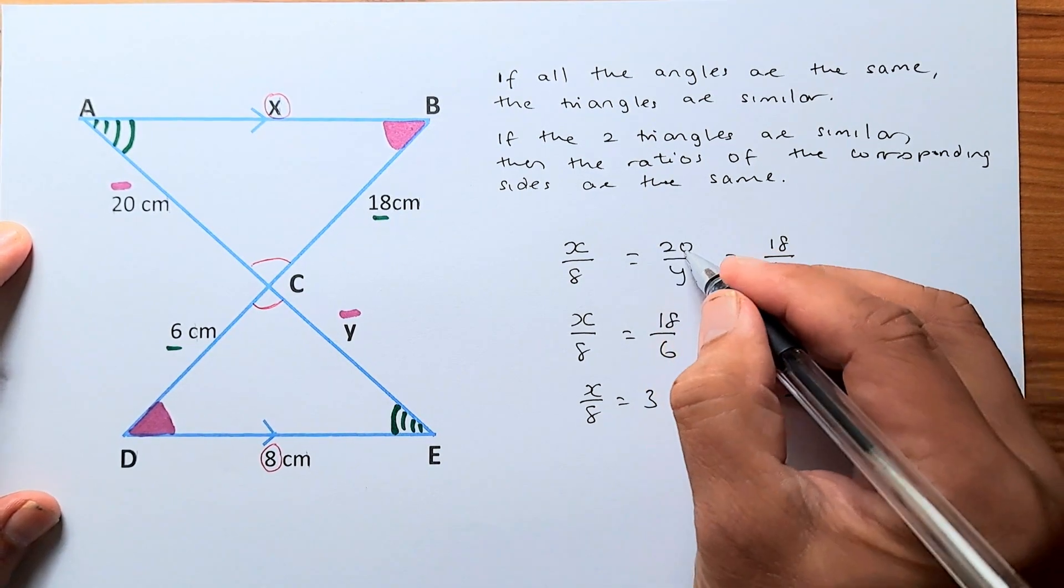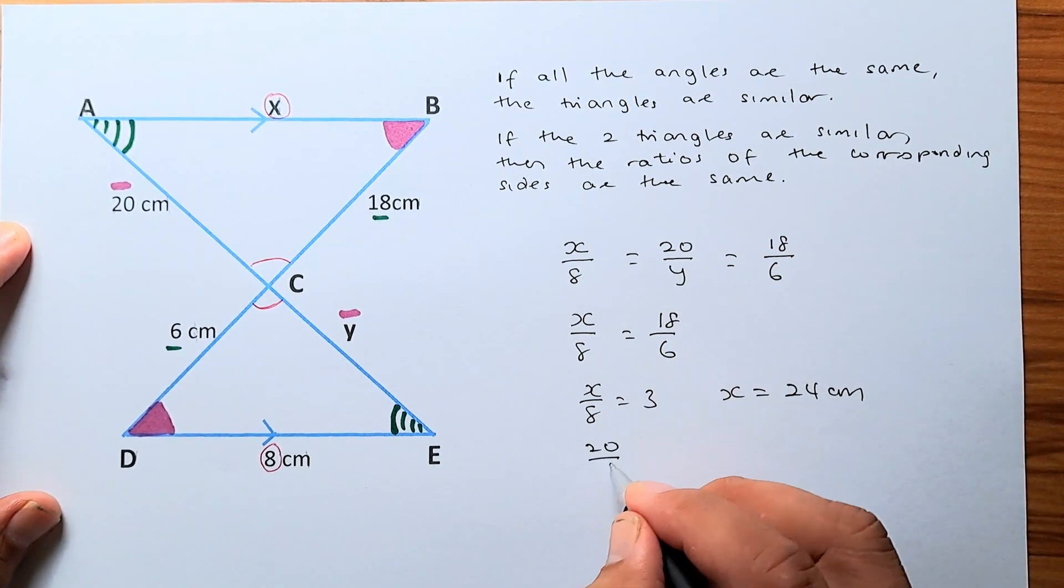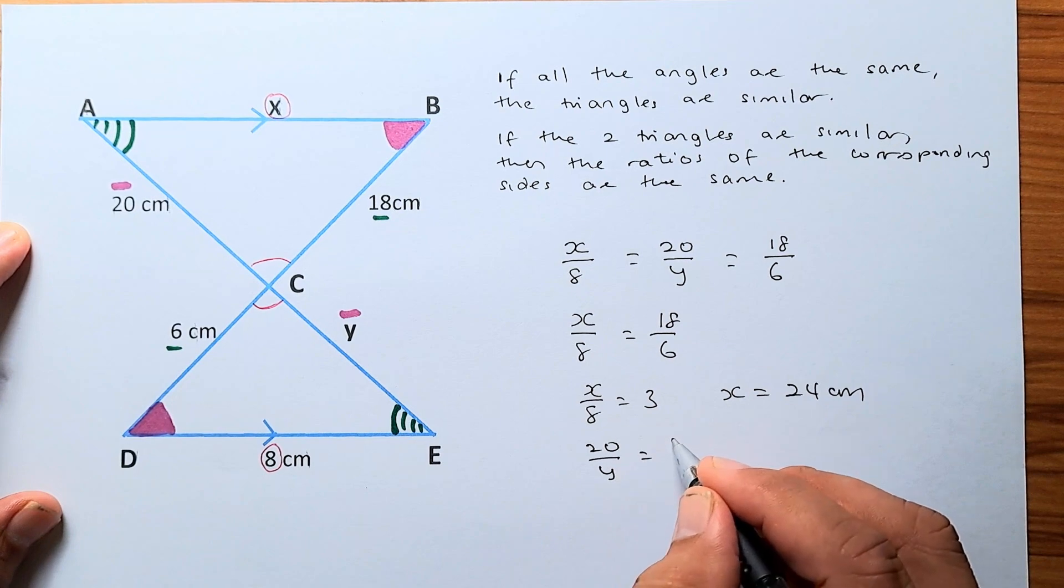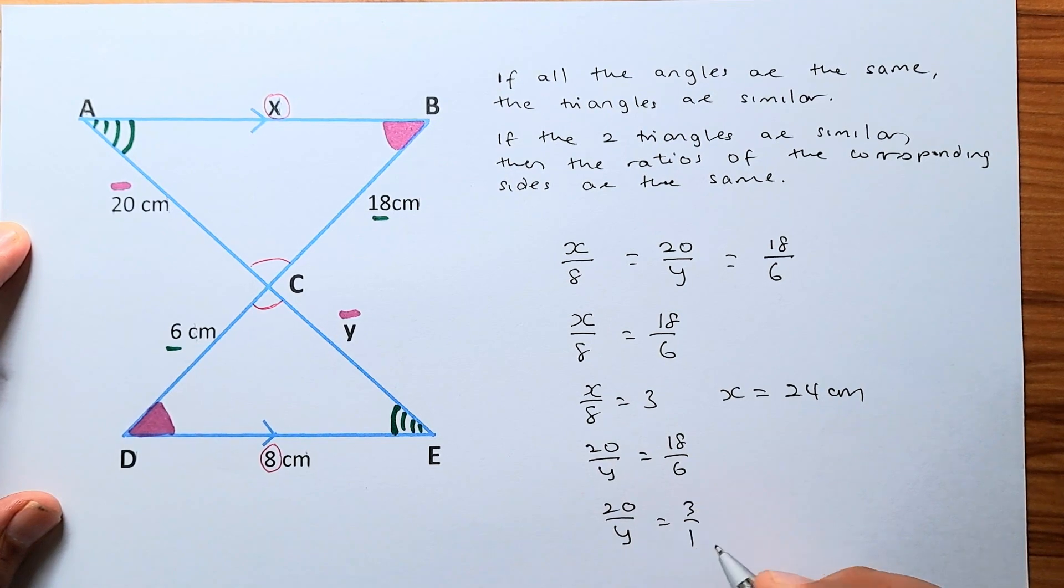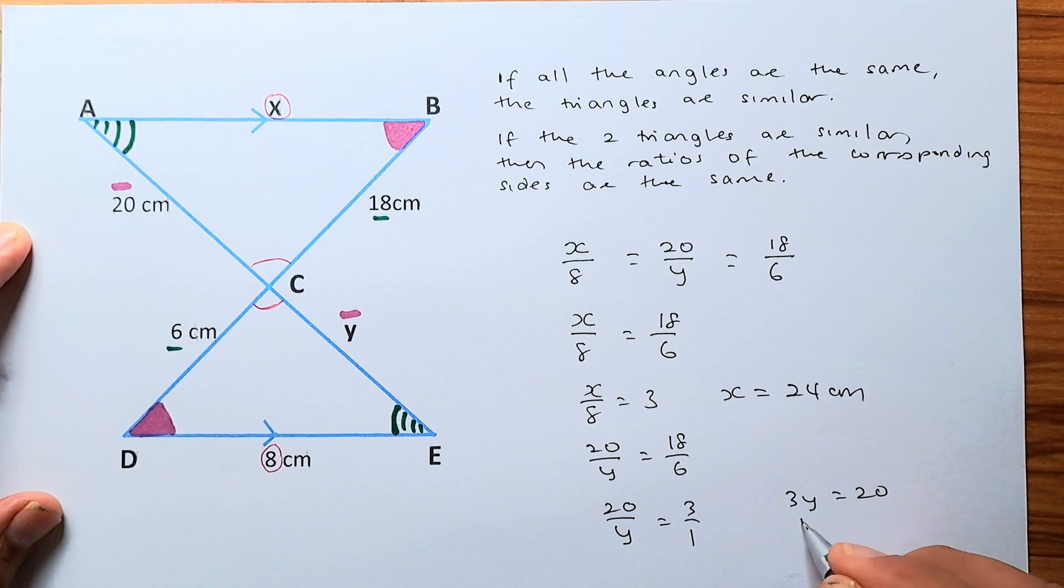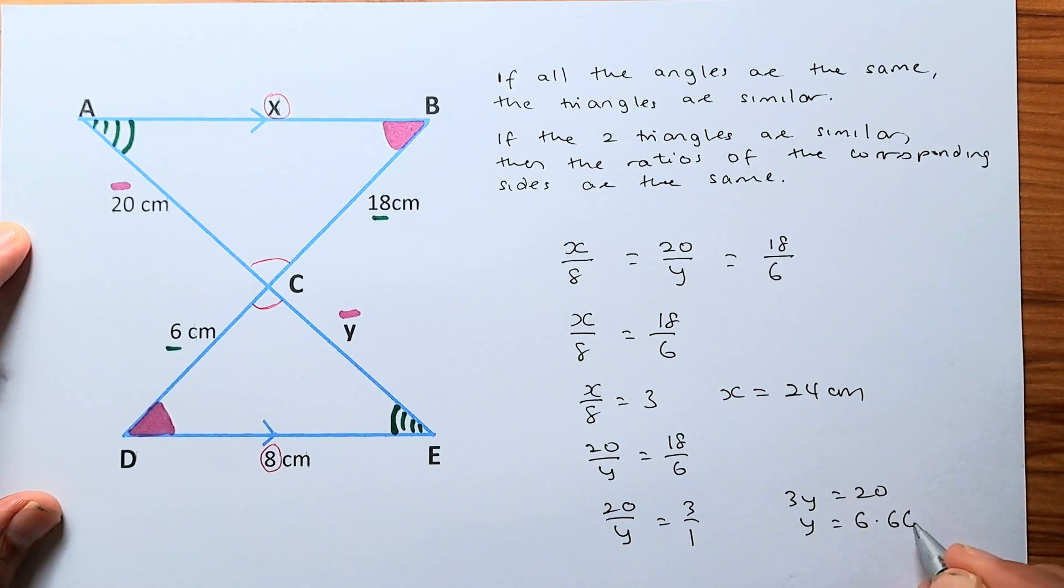To find Y is the same. So 20 over Y is equal to 18 over 6, or 20 over Y is equal to 3 over 1. You cross multiply, 3Y is equal to 20. Y is equal to 6.66 cm.